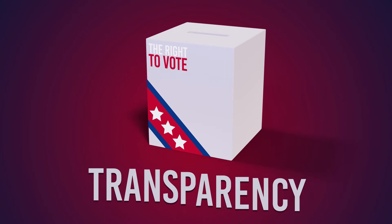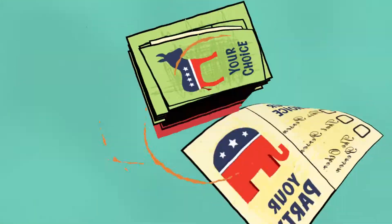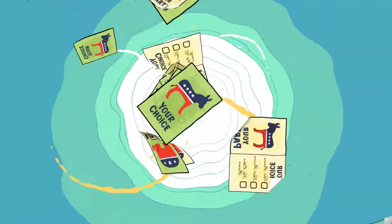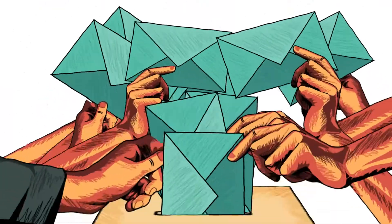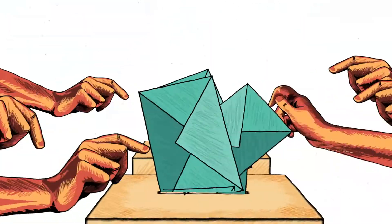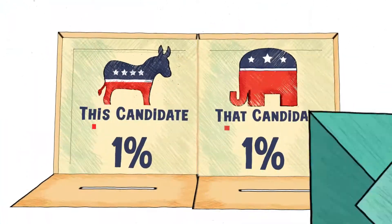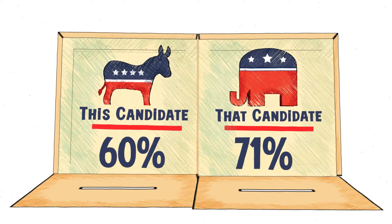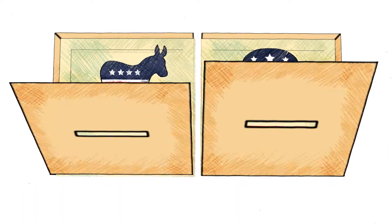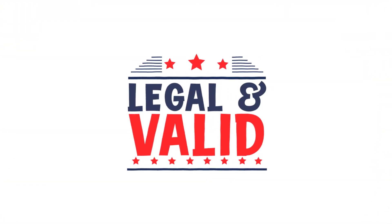Transparency. Any fair election permits people to see what's going on behind the scenes. Fair elections have observers who can examine the votes being counted, to make sure officials are accurately counting only the legal, valid votes.